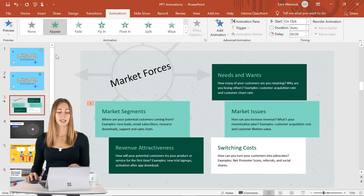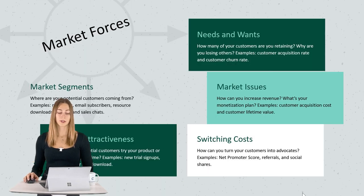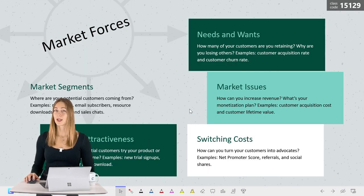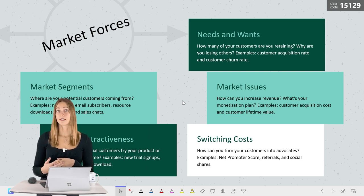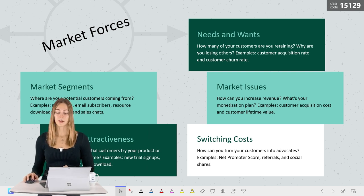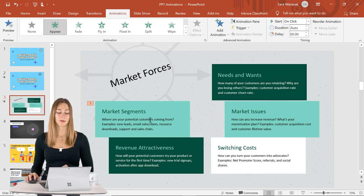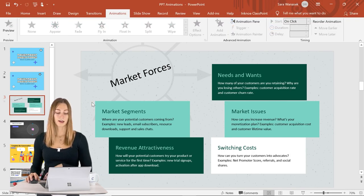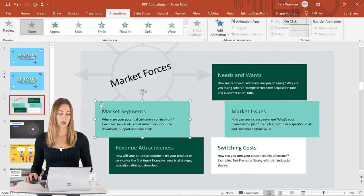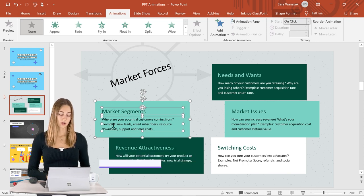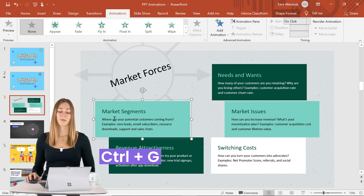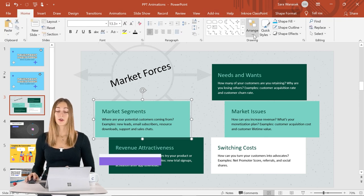It's kind of hard to see in the preview, so if we go into presentation mode you can see right away we made a quick mistake — our text is still there because the shape behind it is the one that's animated. That's because we didn't group these things together. We can go back — it's a very easy fix. Let's first remove the animation, then click on the shape, hold down the Shift key, and click on the text boxes.